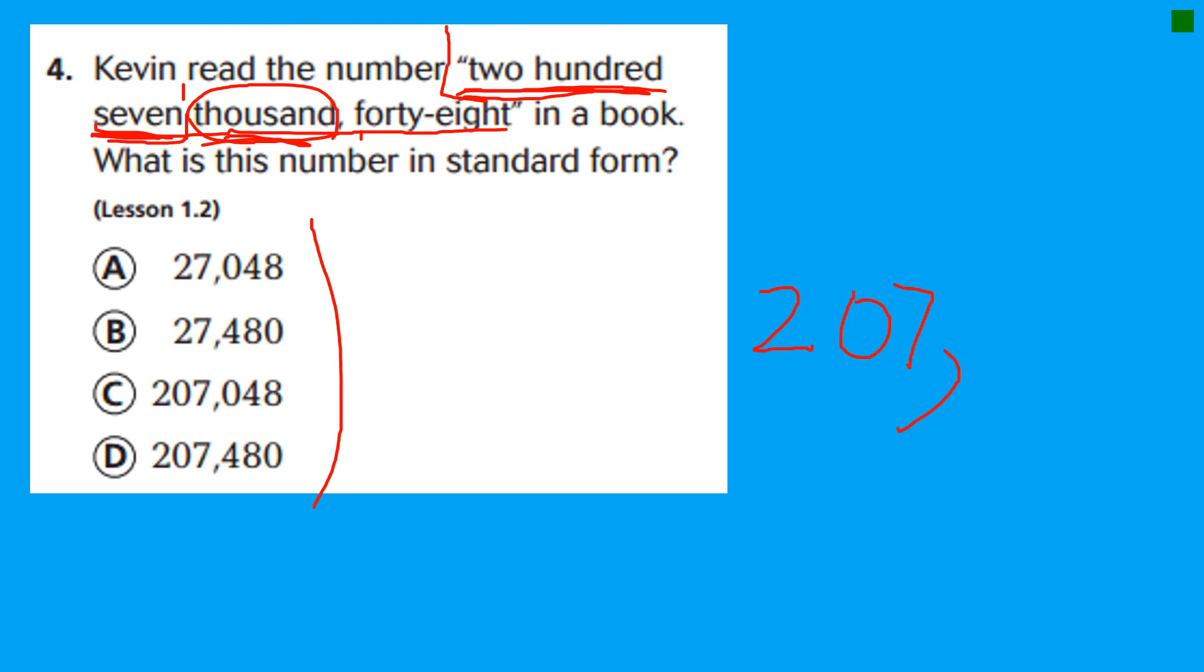207,000. And then 48. Well, I know how to write 48. But if I just write 48, that's not what numbers look like. You guys know that periods of numbers have three digits in them and that's only two digits. So, guess what? This number just doesn't happen to have anything in the hundreds place.